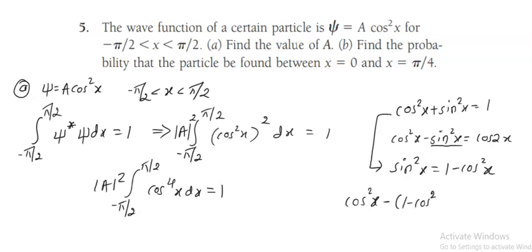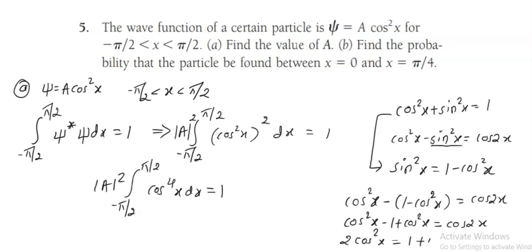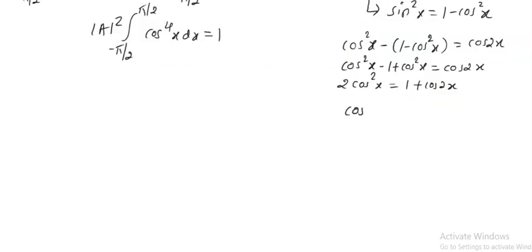Substituting, cos squared x minus (1 minus cos squared x) equals cos 2x. So 2 cos squared x minus 1 equals cos 2x, which gives cos squared x equal to 1 plus cos 2x, the whole divided by 2.